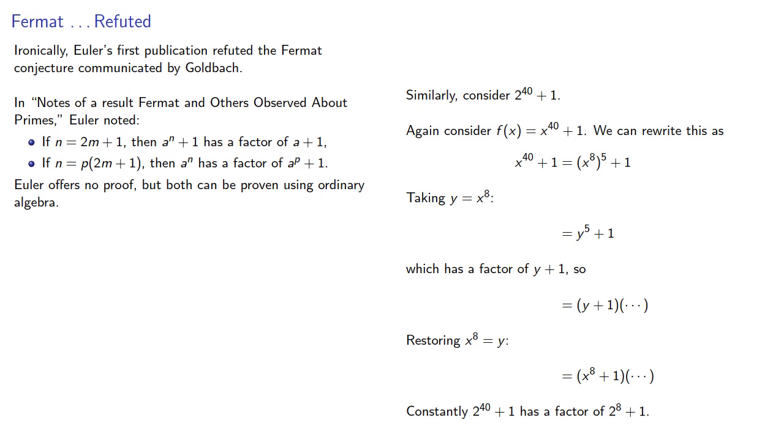Now, this means that certain powers plus 1 are definitely composite. Conversely, it follows that a to the n plus 1 can only be prime if a is even and n is a power of 2.